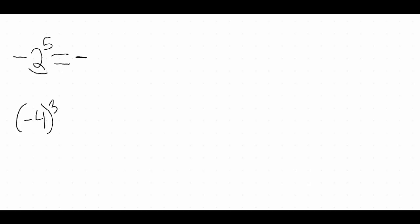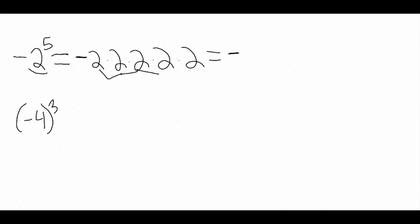What that means is we have a negative, and then two to the fifth. So I'm going to multiply two by itself five times. This is not negative two times negative two times negative two and so on — this is a negative, and then two to the fifth: two times two times two times two times two. Two times two is four, four times two is eight, eight times two is sixteen, and sixteen times two is thirty-two. So here we would get negative thirty-two as our answer.